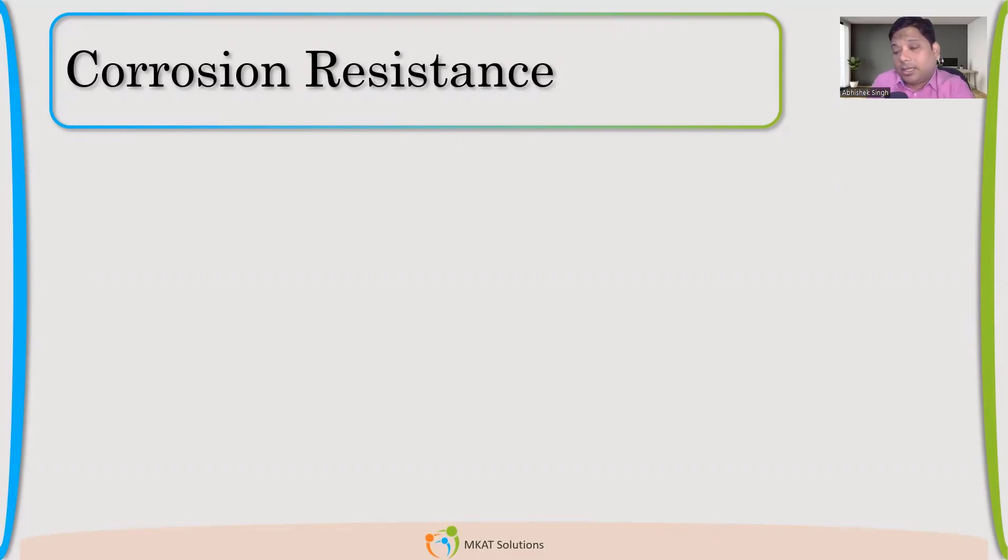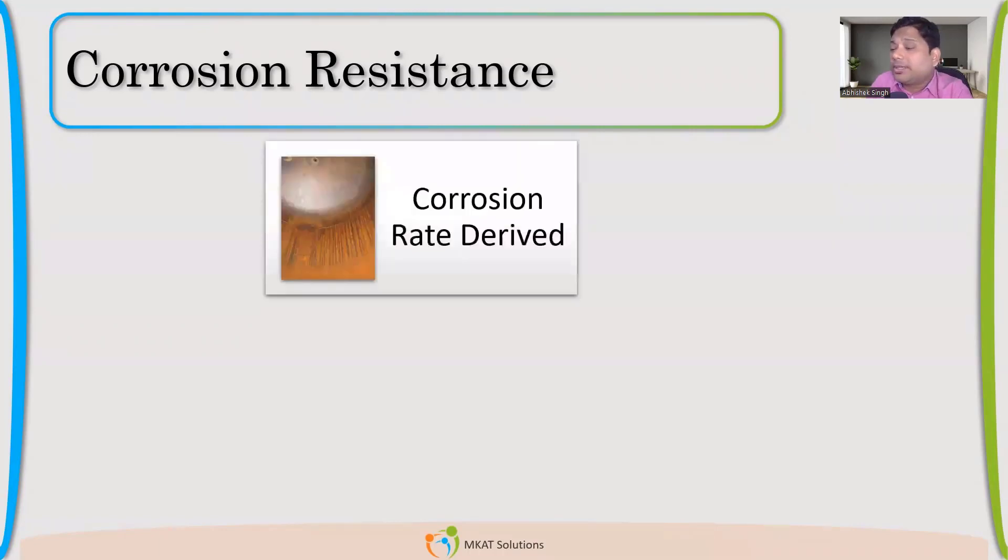Now, let us say we want to know what is the corrosion rate. If we have to provide corrosion allowance for a material, we need to know the corrosion rate. So, how can it be derived? How can corrosion rate be derived?